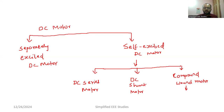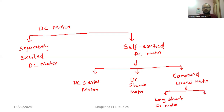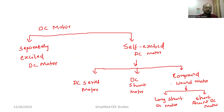You can further divide compound motor. There are many classifications for compound motor. Generally, we classify it as long shunt DC motor and short shunt DC motor. We also have cumulative compound motor and differential compound motor, but for beginner level, the basic classification is more than sufficient.